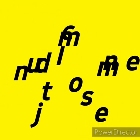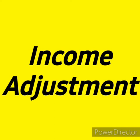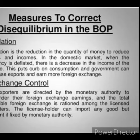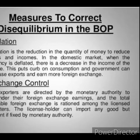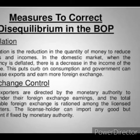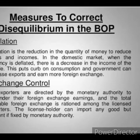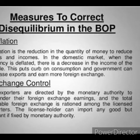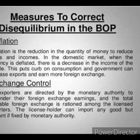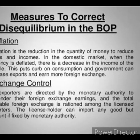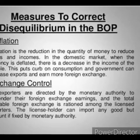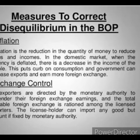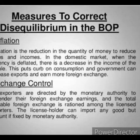Income adjustment: a nation with a payment surplus will experience rising income, which will increase imports, and thereafter equilibrium is restored in the balance of payment. If a nation is paying a surplus of payments, income will also rise, and with rising income they will increase their imports. Just like in price adjustment, the deficit country encourages exports and the surplus country increases imports. When we get more income, we increase imports by purchasing things from other countries.